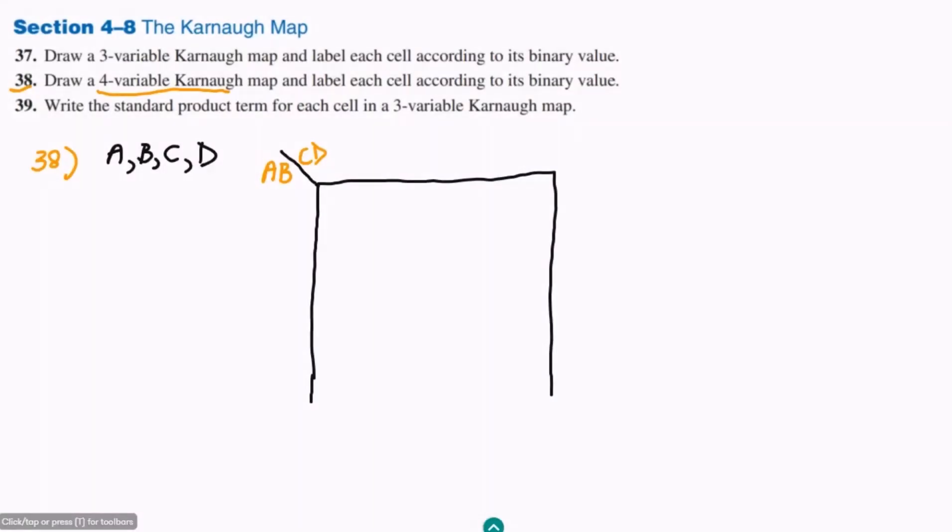Writing their values, what we can do. These are A, B, so A, B can have two bits. Those two bits can have either 0, 0, then 0, 1. After it I have to write 1, 1, and the reason I have mentioned in my previous video. So 1, 1 and also 1, 0.